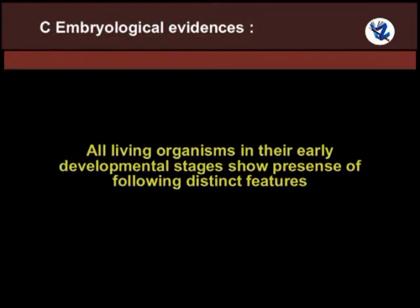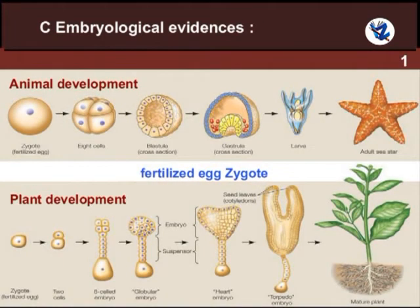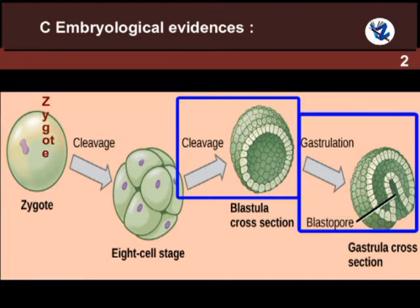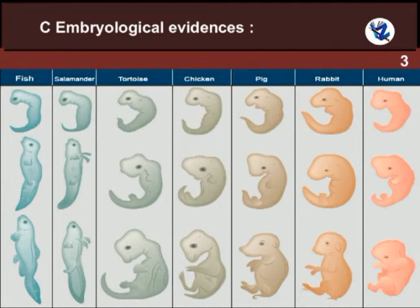Embryological evidence: All living organisms in their early developmental stages show the following distinct features. Development in sexually reproducing organisms begins from a single diploid cell, the fertilized egg or zygote. The zygote undergoes cleavage, blastulation and gastrulation, forming three germ layers that give rise to various organs and organ systems. Embryos of different vertebrates from fishes to mammals look alike, particularly with reference to gill slits, gill clefts and tails. From these similarities it can be concluded that all these groups have evolved from the same ancestral stock.